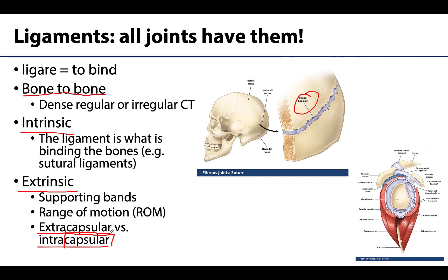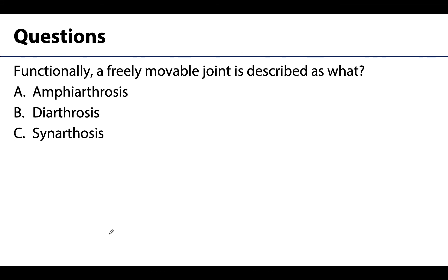Let's review a concept regarding those functional classifications. Functionally, a freely movable joint is described as what? A, an amphiarthrosis; B, a diarthrosis; or C, a synarthrosis. Pause the video if needed. The correct answer is B, diarthrosis. Amphiarthroses are very slightly movable but certainly not freely movable, whereas a synarthrosis is immovable. All synovial joints will be diarthrotic, or freely movable, and that relationship between free movement and synovial joints is a really important one — that is where we get those typical movements of the body that we often think of.